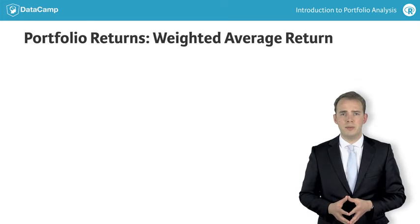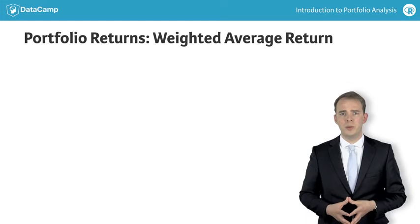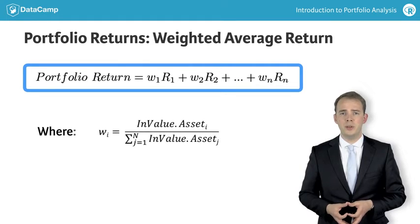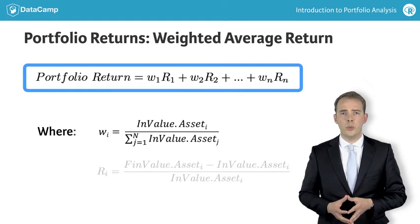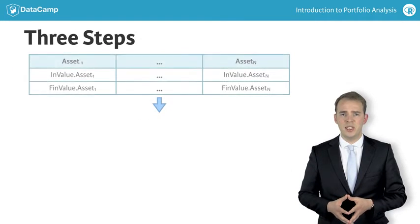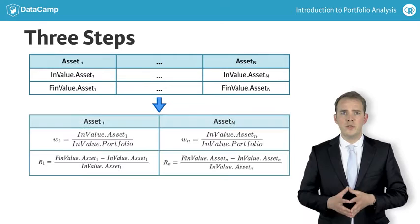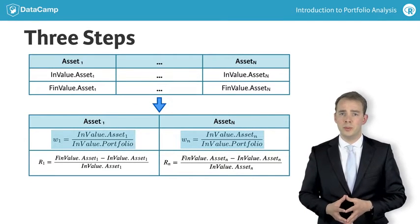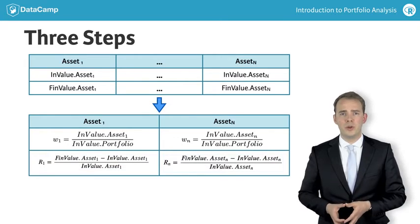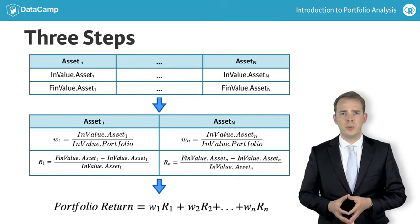A disadvantage of this calculation method is that it does not show how the portfolio weights determine the portfolio return. Let us therefore consider a different formula in which the portfolio return is computed as the weighted average of the returns of the underlying assets. Its calculation proceeds also in three steps. First, the initial weights of the positions are computed. Secondly, the return on each of the individual positions is determined. Then, in the third step, the portfolio return is computed as the sum over the product between the initial weights and the corresponding returns.